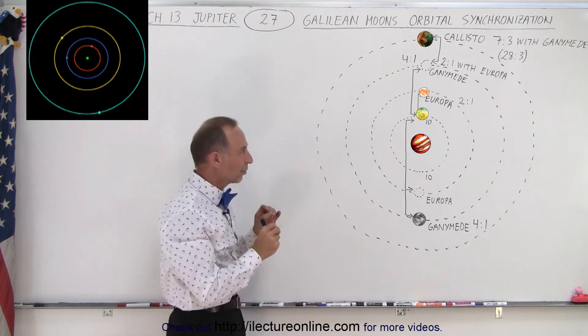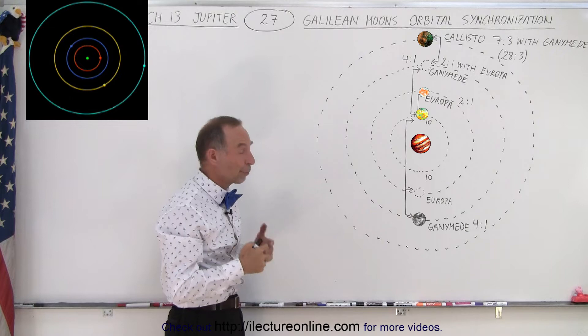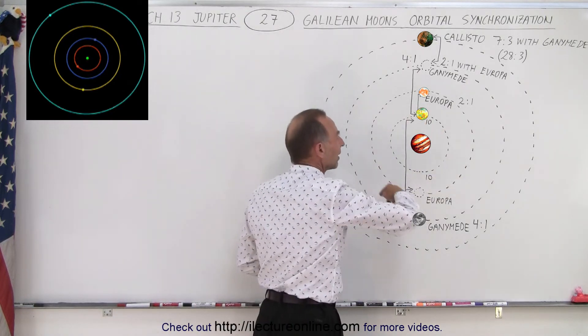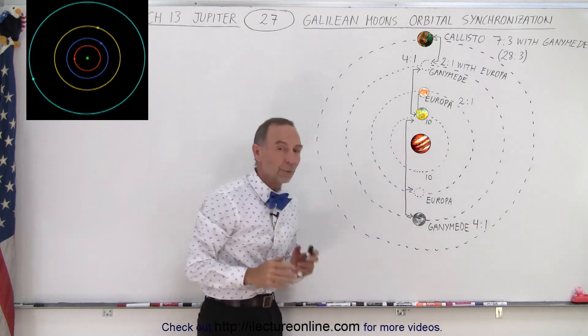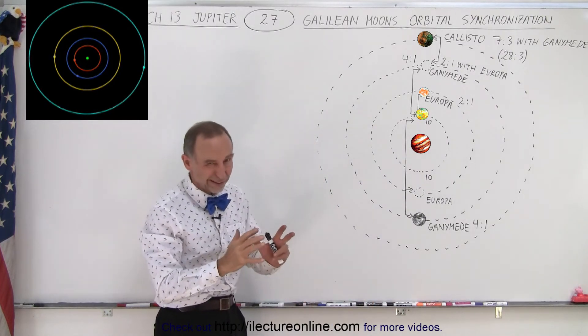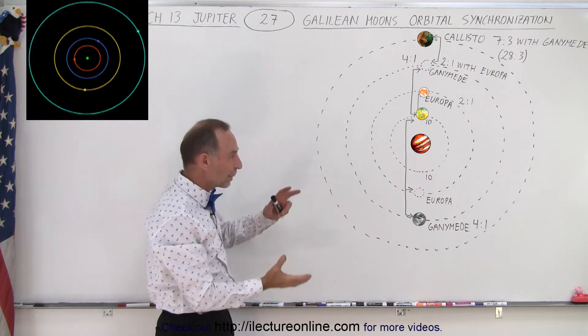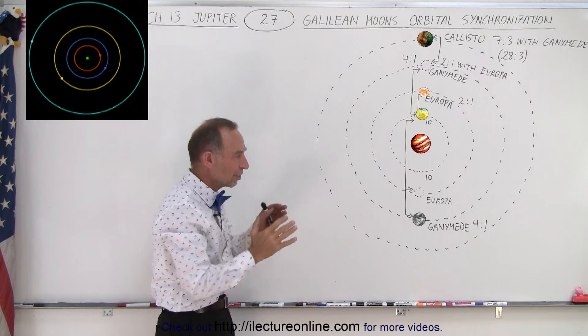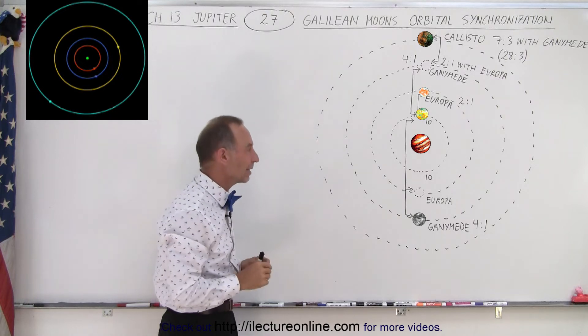Now because of that, there are several outcomes from that. For one thing, it keeps the moons in very nice, very low eccentric orbits. In other words, the orbits of the four moons are nearly circles, slightly off from being circles. And that's because the gravitational forces and pulls of the moons being in that synchronization keeps them right on the path they need to be.